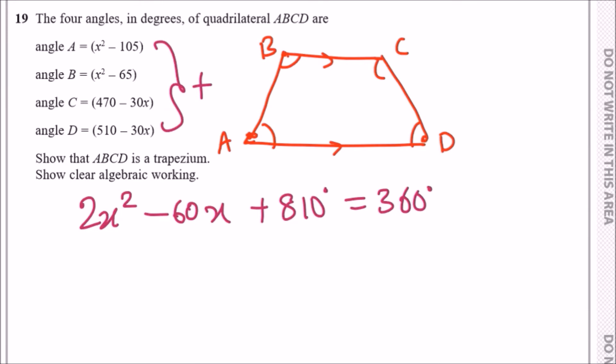Now let's solve this. This is a quadratic equation, so we need to subtract 360 across. We have 2x squared minus 60x minus 360, and you should get 450 equals zero.